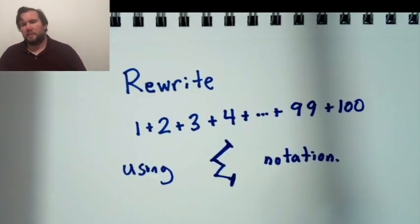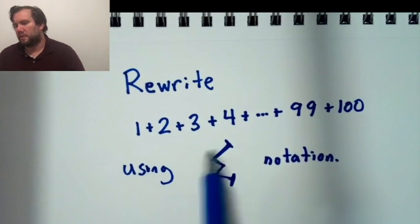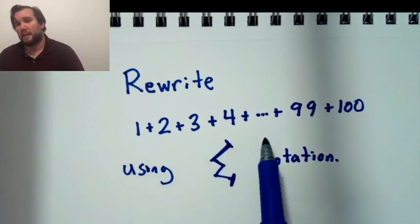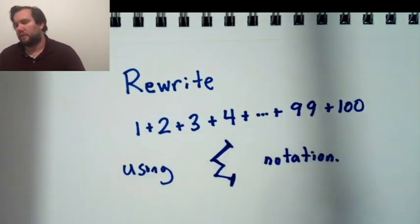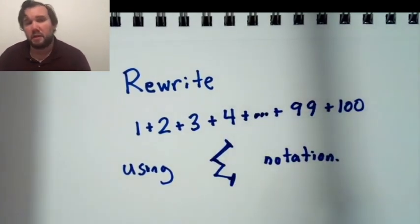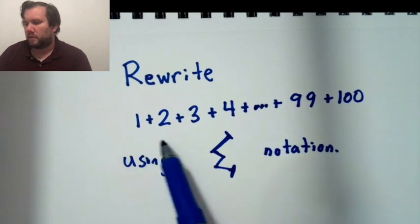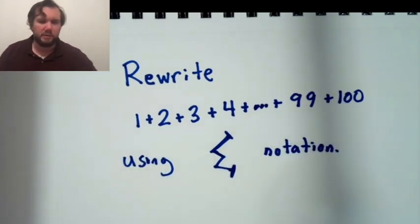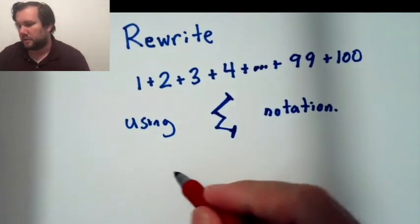Now let's look at rewriting 1 plus 2 plus 3 plus 4 plus dot dot dot plus 99 plus 100. When we see this dot dot dot, that means that we're leaving out some values, but we think that the pattern is clear. So I don't want to write 1 plus 2 all the way up to 100, so I use the dot dot dot. So rewrite this using summation notation with this Greek sigma.